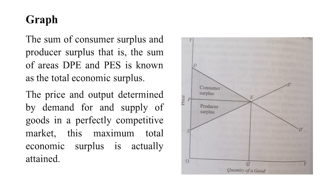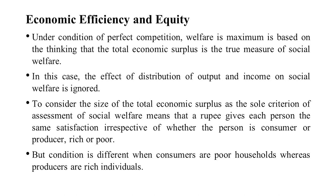This is only possible in the case of perfect competition. It is assumed that economic surplus is maximum when consumer surplus and producer surplus are high. Under conditions of perfect competition, welfare is maximum, and total economic surplus is the true measure of social welfare, which is the sum of producer and consumer surplus.